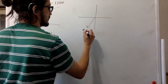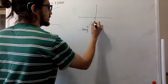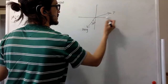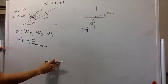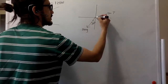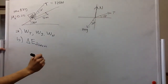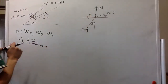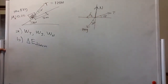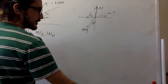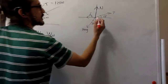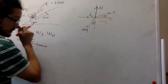So we have gravity acting down with a 30-degree angle. And then we have the tension — the angle is a little exaggerated to make it easier — it's an 18-degree angle. Then we have the normal, which is at a 90-degree angle. And then we have kinetic friction. And the displacement is in that direction.